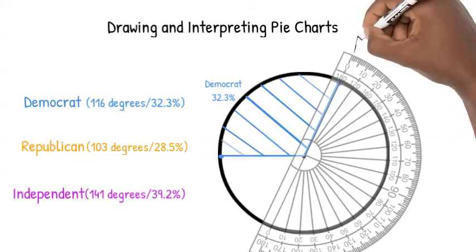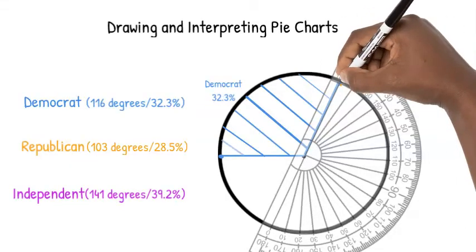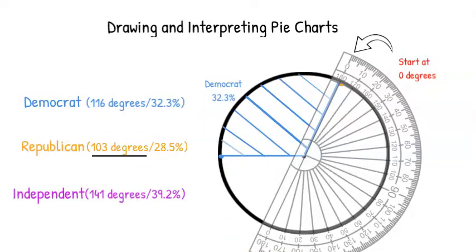If we've lined up the protractor correctly, our first point will be on the edge of the last sector. Since the Republican portion is 103 degrees, we look for 103 on the protractor and mark it as our endpoint.